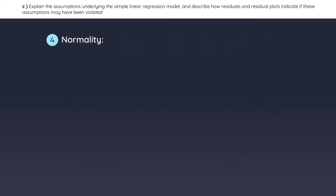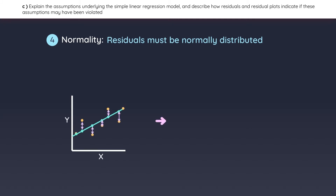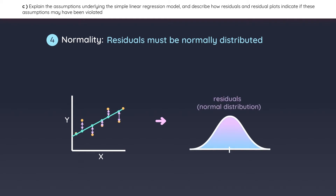The fourth assumption is normality, which states that the residuals must be normally distributed. So if you could take the values of the residuals and plot them on a distribution, it would be a normal distribution.